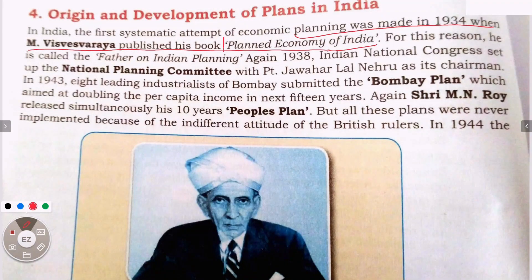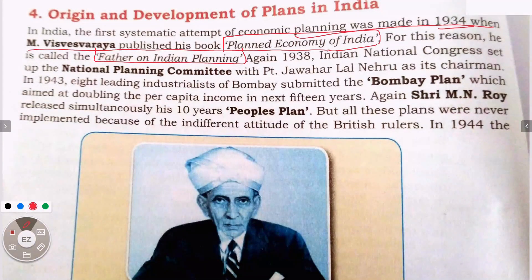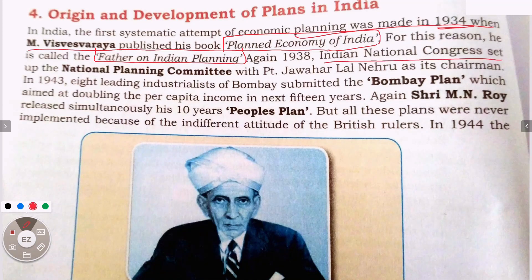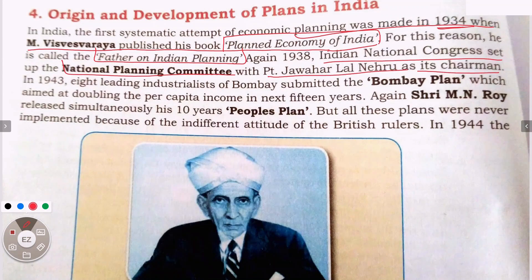The first system of economic planning came from Visvesvaraya, whose book 'The Rural Economy of India' was published in 1934. In 1938, the Indian National Congress set up the National Planning Committee. In 1943, the Bombay Plan was presented, with leading industry figures listed in Bombay, and the National Planning Committee was further developed.